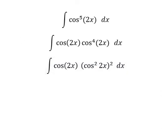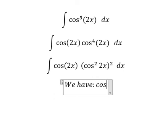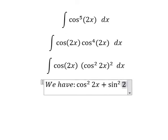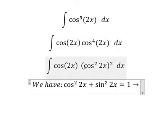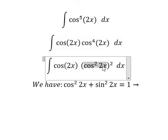So we have the formula in here: cosine squared 2x plus sine squared 2x equals to number one.